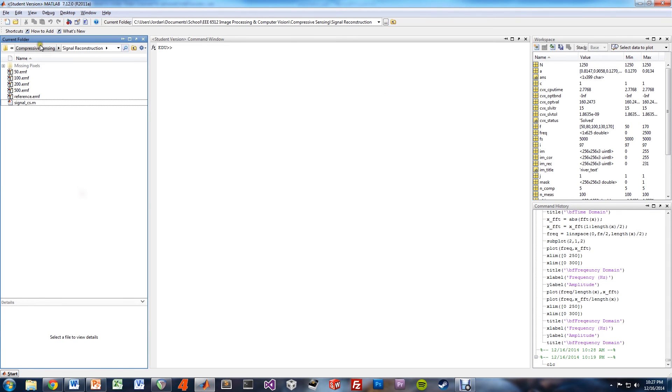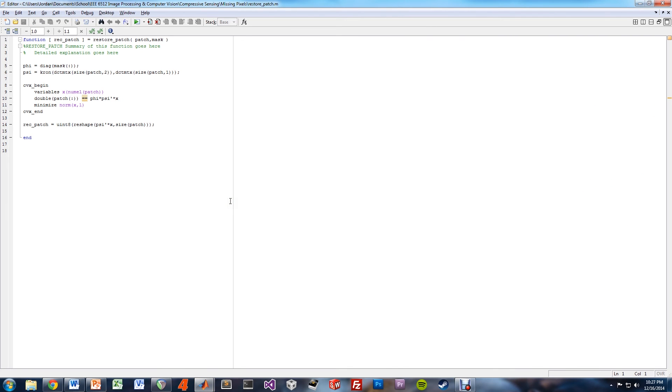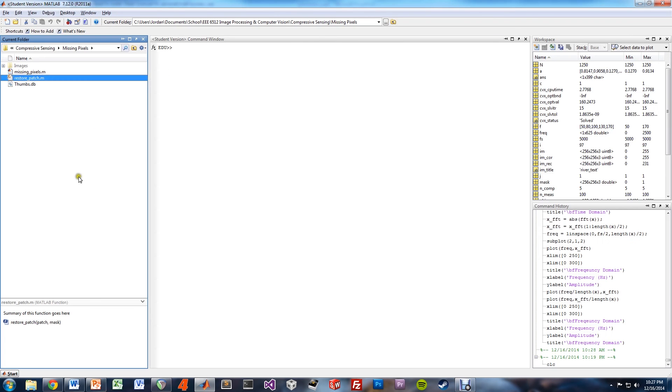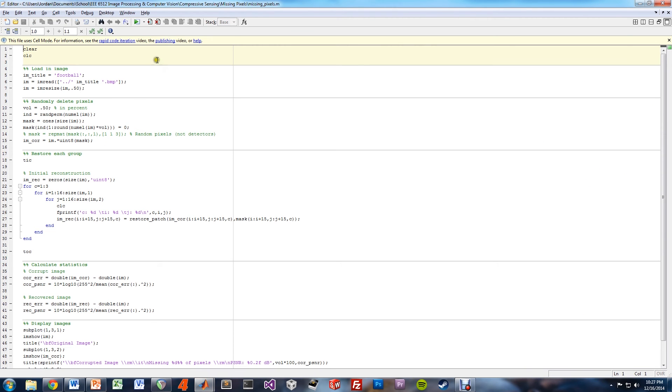Now going up a folder in the missing pixels directory, we have this restore patch function. This takes in a patch of an image along with a mask. The mask tells the program which pixels are corrupt, and then it applies the algorithm we talked about in the missing pixels section of the presentation, where each 16 by 16 pixel patch is modeled as a separate compressive sensing problem. Once that patch has been reconstructed, it's passed back to the main program, which is missingpixels.m.